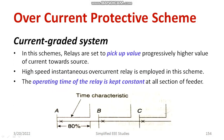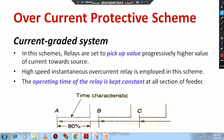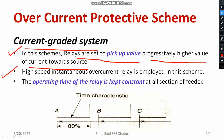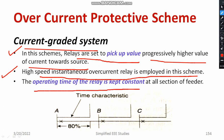Now let's get familiar with another type of overcurrent scheme — the current graded system. Here current is the major parameter. The pick-up value — we can call it pick-up current — is the major factor. In this scheme, relays are set to pick-up values that are progressively higher towards the source. For example, nearby relay A, the value of pick-up current will be very much higher. High-speed instantaneous overcurrent relays are employed for this scheme. The operating time of the relays is kept constant — maybe 0.5 seconds everywhere — but the pick-up current matters.